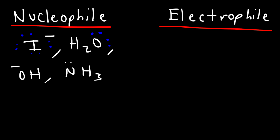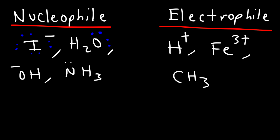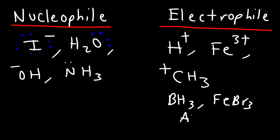Electrophiles usually bear positive charges; they seek out electrons — they love electrons. So H+ is an electrophile, Fe3+ is another one, and a carbocation is an electrophile. Some other electrophiles may not have a positive charge but they can accept a pair of electrons, so BH3, FeBr3, and AlCl3 — all of these can form a bond because they can accept a pair of electrons.